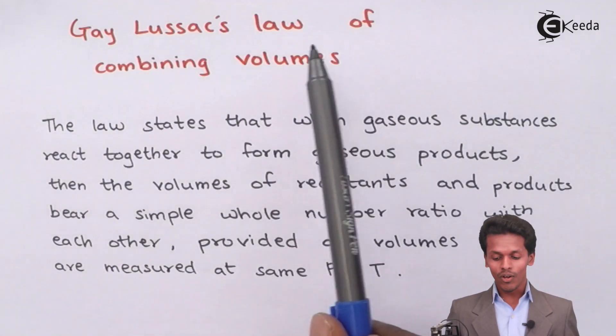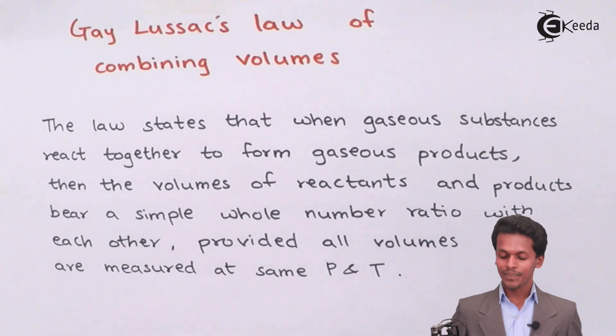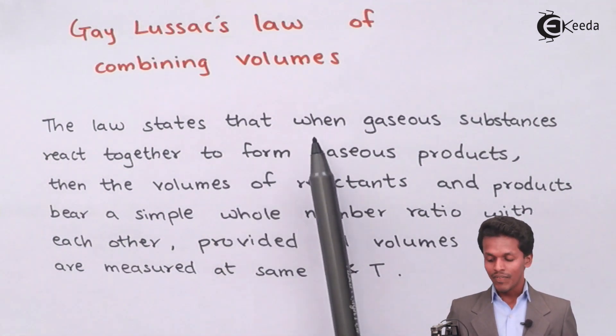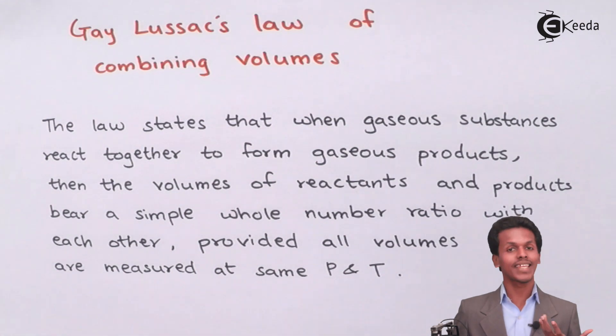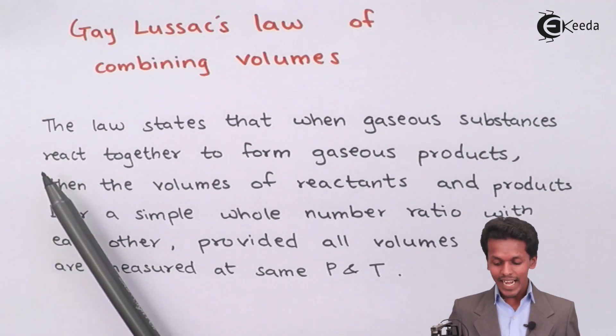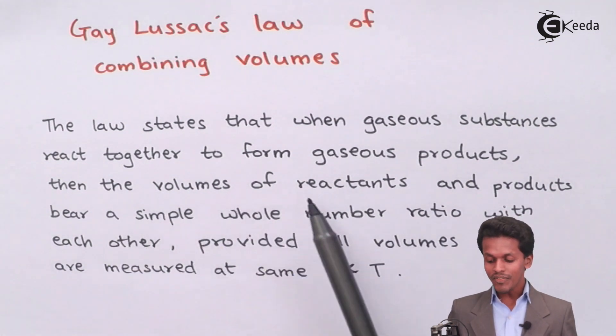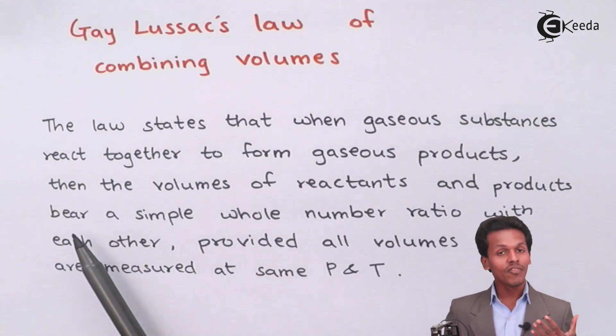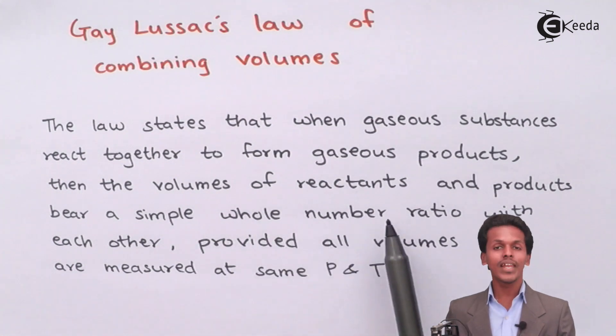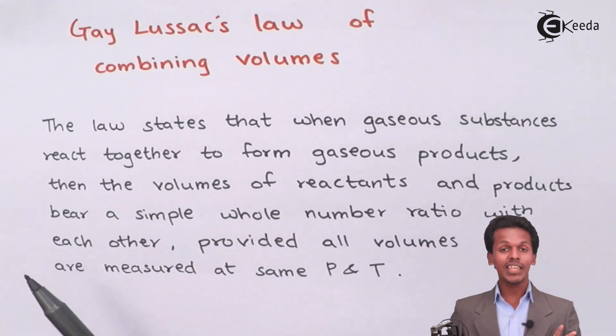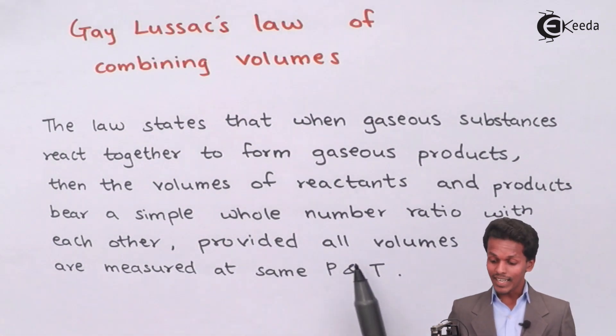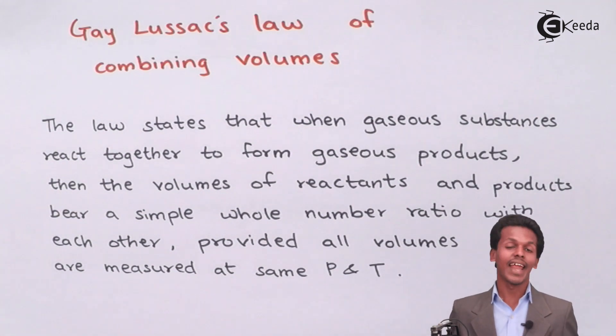Gay-Lussac's law of combining volumes states that when gaseous substances react together to form gaseous products, the volumes of the reactants and products bear a simple whole number ratio with each other, provided all volumes are measured at the same pressure and temperature.